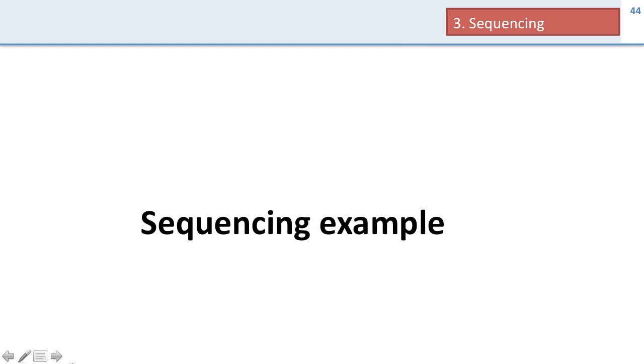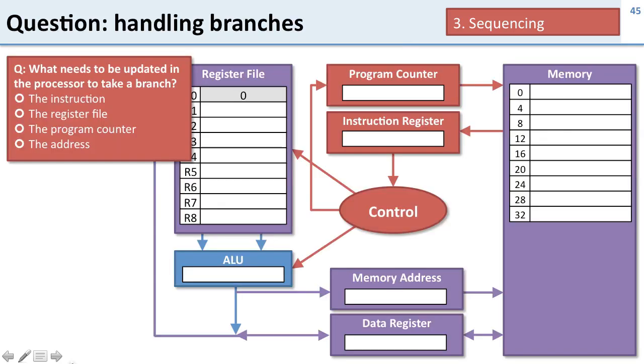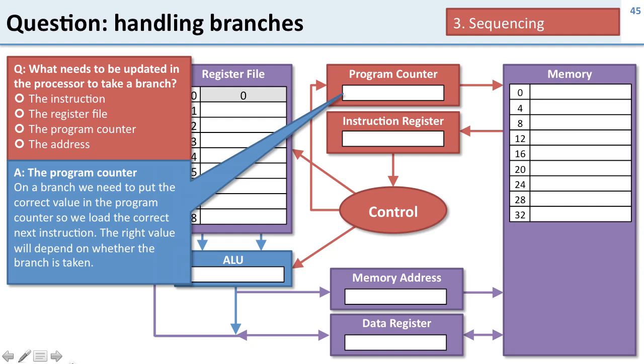Now we're going to look at a sequencing example. Before we do that, here's a question about handling branches. What do we need to update in the processor to take a branch? Which register needs to be changed? The answer is the program counter. If we take a branch, we need to put the new address in the program counter so we know which instruction to fetch from memory to go down the right control path.